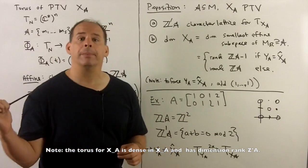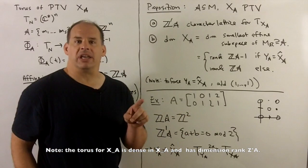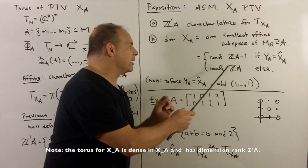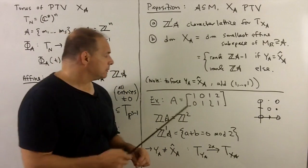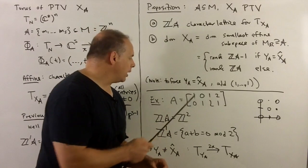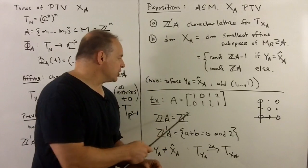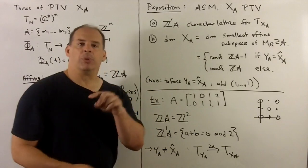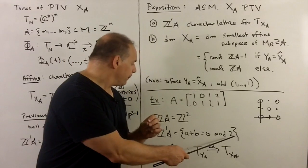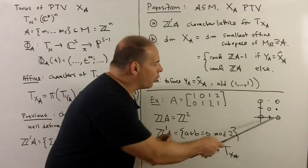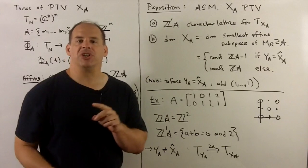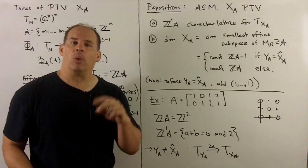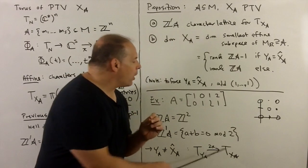The first part follows from what we said. For the second part, if we don't have the cone condition, we can force it by adding a row of ones to the A matrix, which bumps the dimension up by one, giving rank of Z(A). For an example, take the A matrix with columns (1,0), (0,1), (1,2), (2,1). The Z-span of A is just Z-squared because we have (1,0) and (0,1). For Z-prime of A, we get tuples (a,b) where a plus b equals 0 mod 2. For the picture, we get the lattice of open circles, and we note the dimension of Y sub A equals the dimension of X sub A because we don't have the cone condition — what's happening, reflected by the lattices, is that we're getting a 2-to-1 cover of the tori.